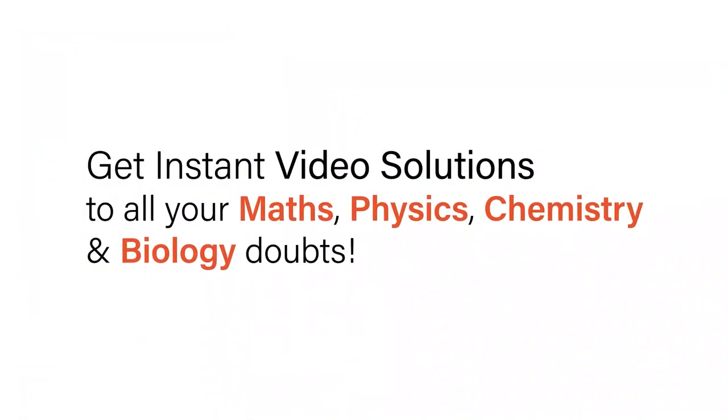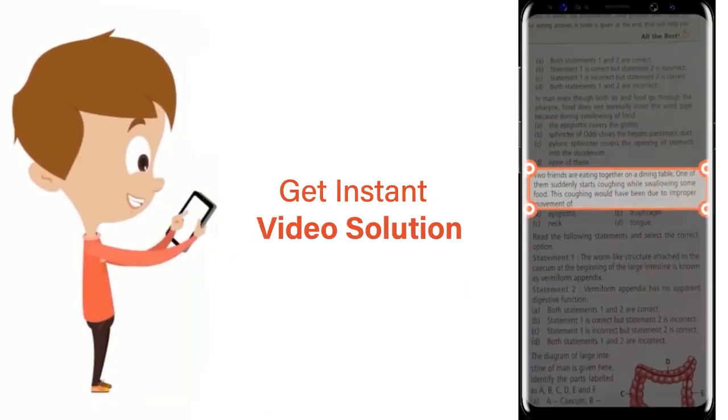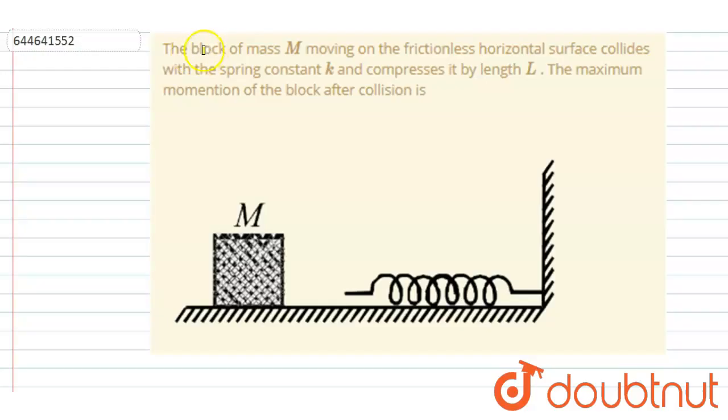With Doubtnet, get instant video solutions to all your math, physics, chemistry, and biology doubts. Just click the image of the question, crop the question, and get instant video solution. Download Doubtnet app today. Hello everyone, the block of mass m moving on a frictionless horizontal surface collides with a spring of constant k and compresses it by length l.